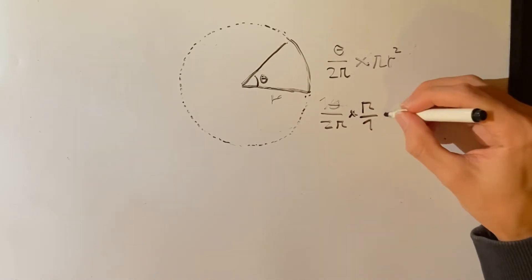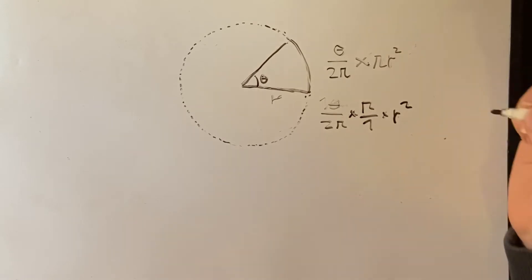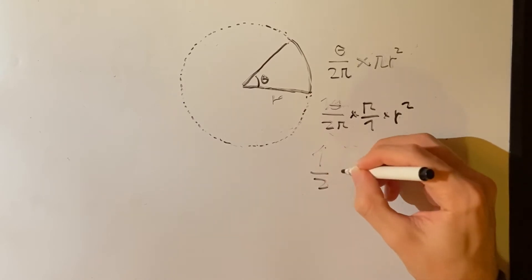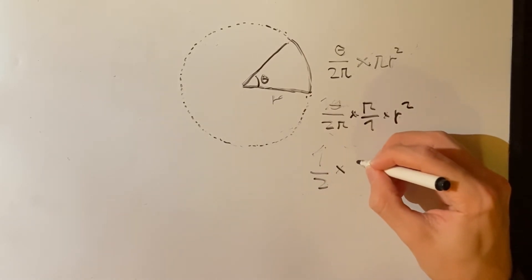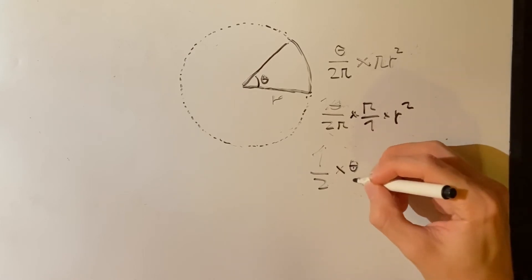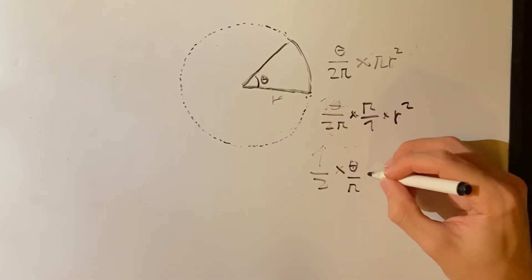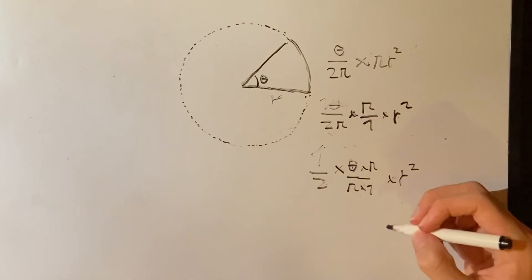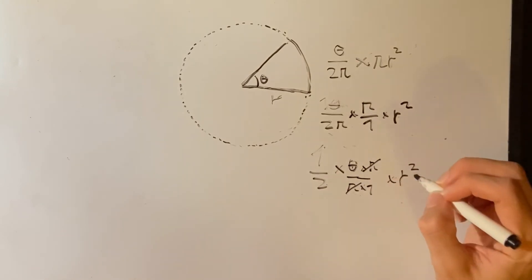Which is just pi times r squared. Here we can also say 1 over 2 times theta over pi times pi times 1 times r squared. We can see that pi cancels out.